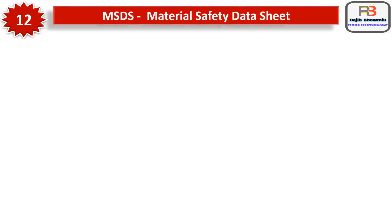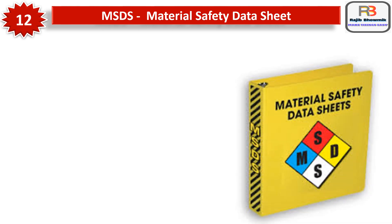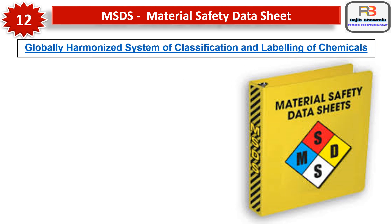Number twelve is MSDS — Material Safety Data Sheet. MSDS is the document that lists information relating to occupational safety and health for the use of various substances and products. The Globally Harmonized System of Classification and Labelling of Chemicals contains a standard specification for MSDS. The MSDS follows a 16-section format which is internationally agreed.